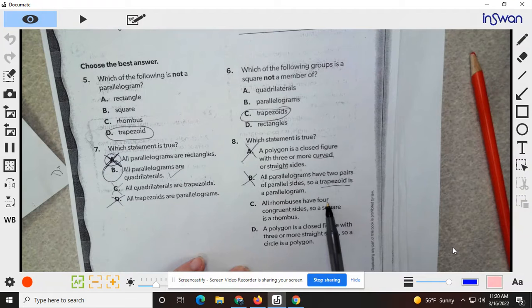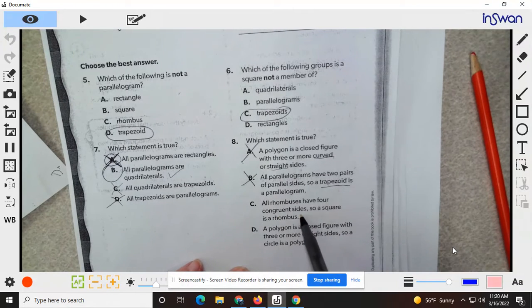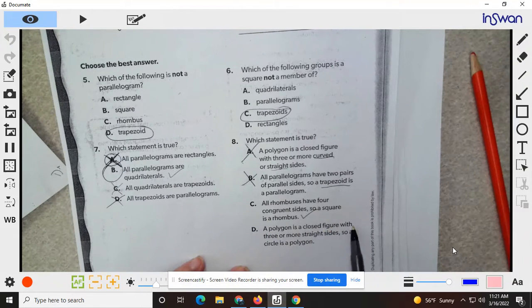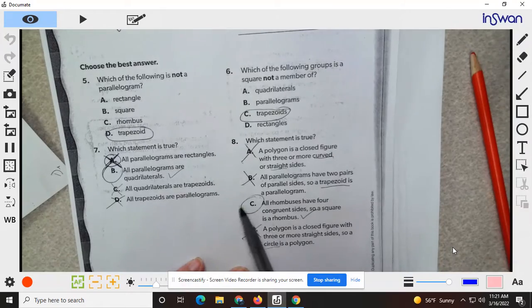All rhombuses have four congruent sides, so a square is a rhombus. That is true. I'll go ahead and read the last one just in case. A polygon is a closed figure, true, with three or more straight sides, true. So a circle is a polygon. Well nope, that is a curve. So no. So C is your answer.